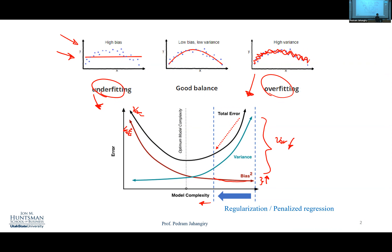The whole point of regularization: if I add a little bit of bias to the model — which is not a good thing — but that little bias helps me reduce the variance a ton, then overall the mean squared error is going to decrease. Remember MSE equals bias-squared plus variance plus irreducible error. If I add a little bias on purpose and the variance shrinks a lot more, overall MSE decreases. That's the whole point — restricting the model, making it less complex and more interpretable.